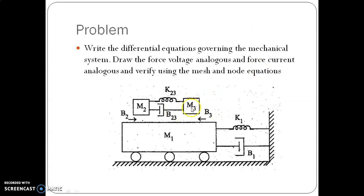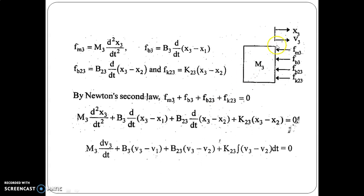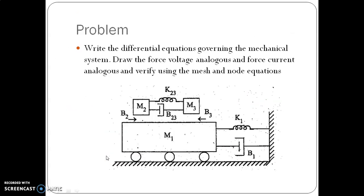For m3, the associated elements are m3, k23, b23, and b3. The opposing forces are fm3, fb3, fb23, and fk23. The sum of these opposing forces equals zero as there is no input force. Now write the expressions in terms of velocity.